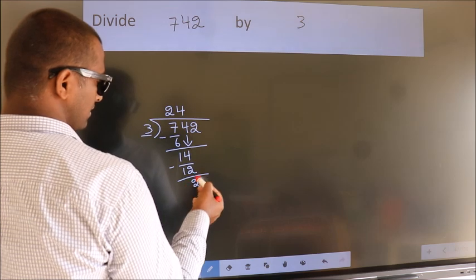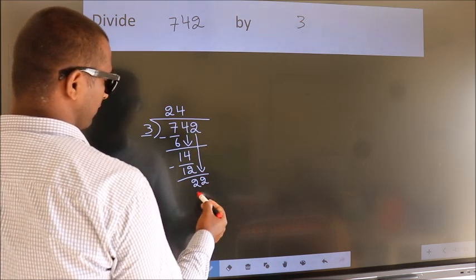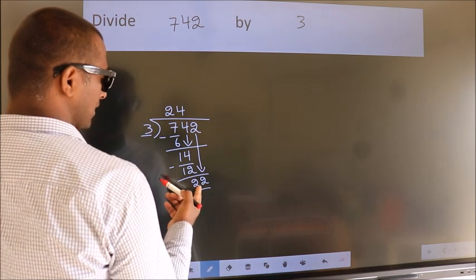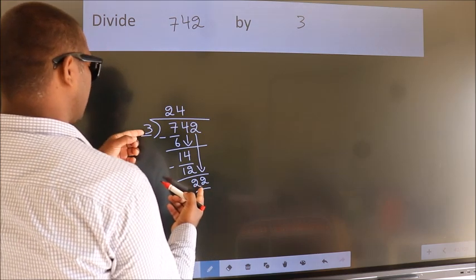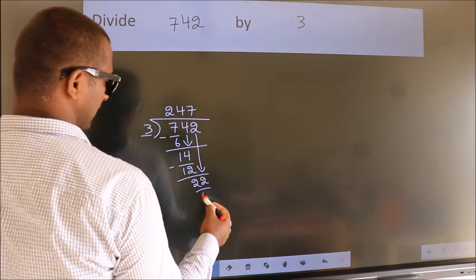After this, bring down the next number. So 2 comes down, giving us 22. A number close to 22 in the 3 times table is 3 times 7, which is 21.